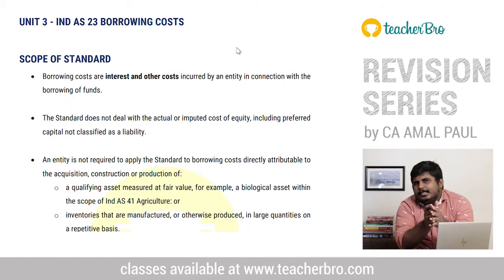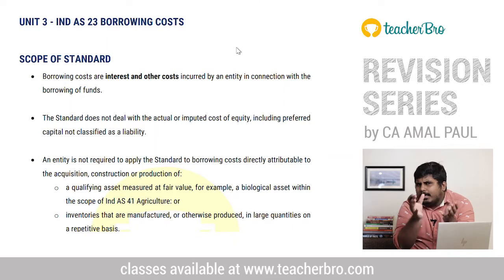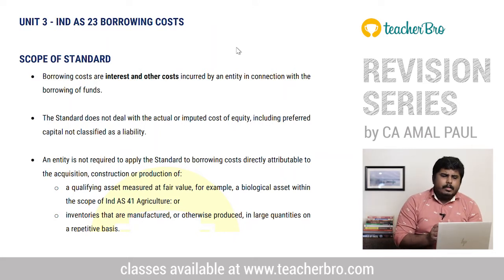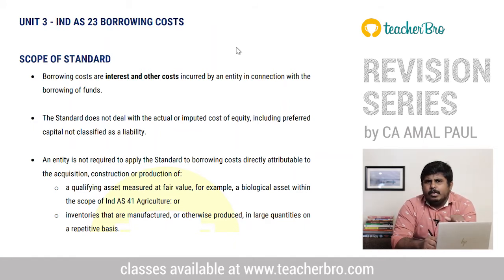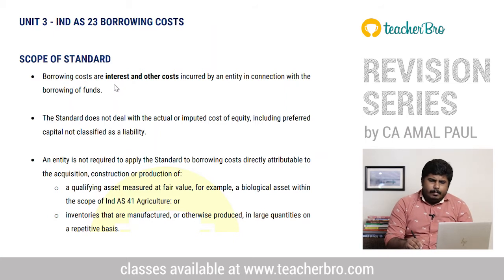Hi everyone. Next standard is Ind AS 23 on Borrowing Costs. Ind AS 23 on borrowing costs is similar to Accounting Standard 16. It will be having some importance — it is not that we are going to test the exam, but still it may come. So here is Ind AS 23 — Borrowing Costs — accounting treatment. Basically, borrowing cost is placed in P&L or capitalized by the entity in connection with borrowing of funds.